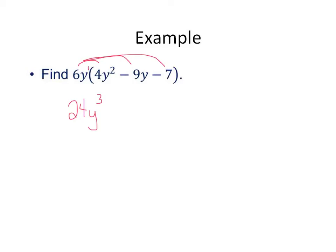Then it's going to be minus, we're multiplying again, 54y squared. And then multiply to the last one minus 42y. And you're done with that problem.